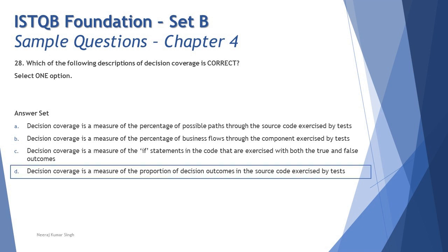It's not a measure of if-statements limited to true and false — it's a proportion: how many decisions have your tests covered divided by the total number of decisions in the code. So D is more appropriate than C. The right answer is D: decision coverage is a measure of the proportion of decision outcomes in the source code exercised by the test.